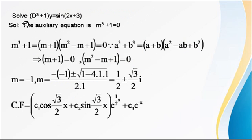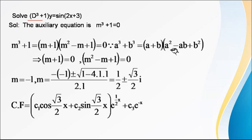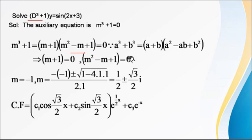Example 1: Solve (D³+1)y = sin(2x+3). The auxiliary equation is m³+1 = 0. Using the formula a³+b³ = (a+b)(a²−ab+b²), with a = m and b = 1, we factor and set each factor to zero. From m+1 = 0 we get m = −1. For the quadratic factor, applying the quadratic formula: minus b ± √(b²−4ac) / 2a gives the roots.